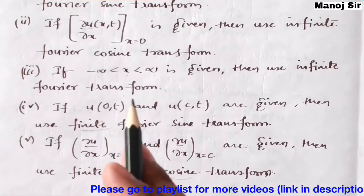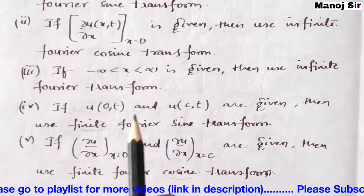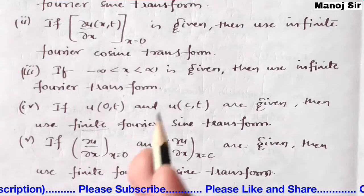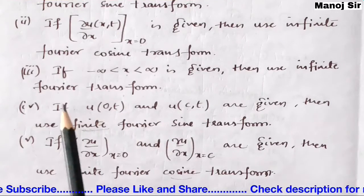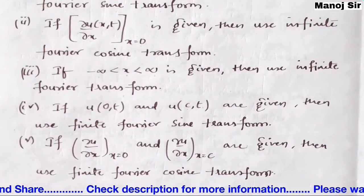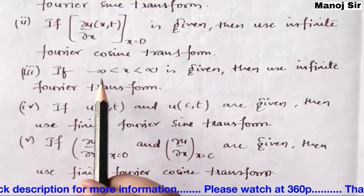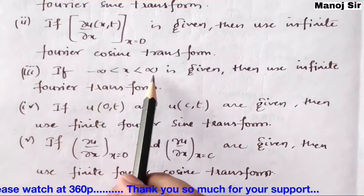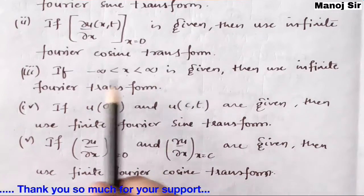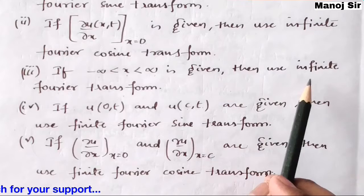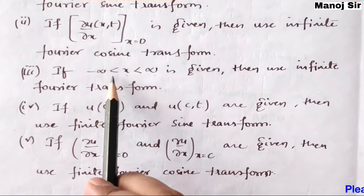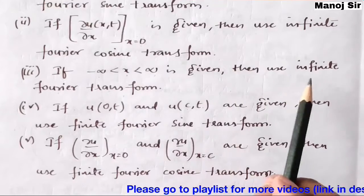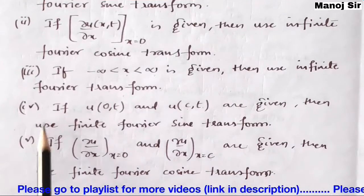These points are very important for solving problems on the application of Fourier transform. Now the third case: if the range of x is from minus infinity to plus infinity, then we need to use the infinite Fourier transform.